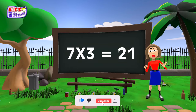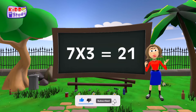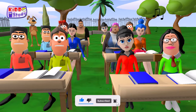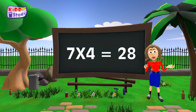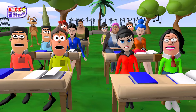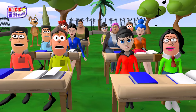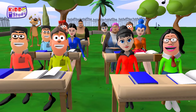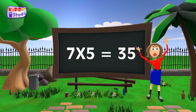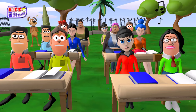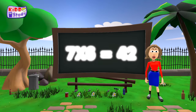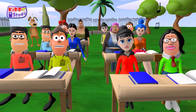7 threes are 21. 7 fours are 28. 7 fives are 35. 7 sixes are 42.